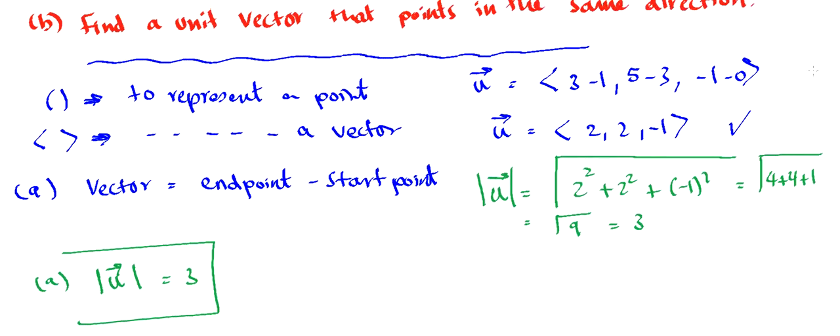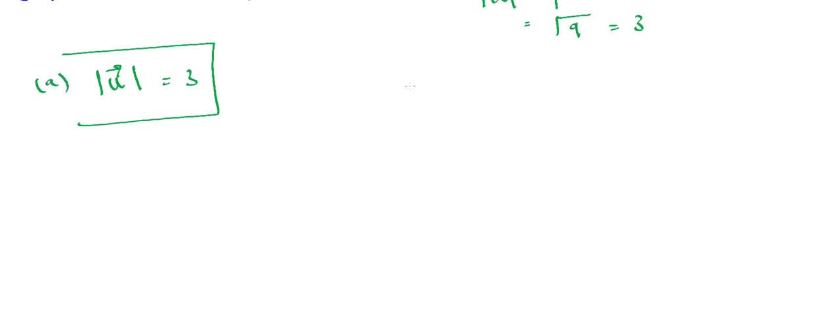Now part b is asking us to find the unit vector that points in the same direction. So we have the formula to find the unit vector. To find the unit vector, we have the vector itself and then divide it by its magnitude.